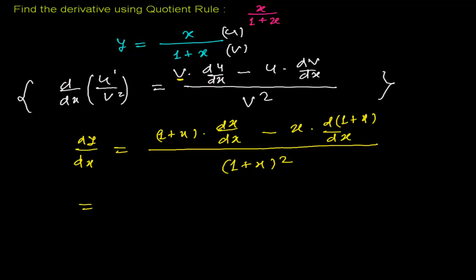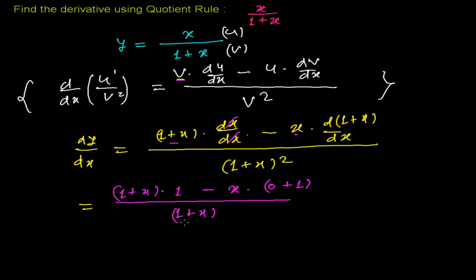Now let's solve it. We have 1 plus x times dx over dx — I can cancel that — so I get 1, minus x times the derivative of 1 plus x. The derivative of 1 is 0 and the derivative of x is 1. So that gives us 1 plus x, times 1, minus x times 1, all divided by 1 plus x whole squared. Since multiplying by 1 gives the same quantity, and the derivative term gives minus x times 1, we write 1 plus x minus x, divided by 1 plus x whole squared.